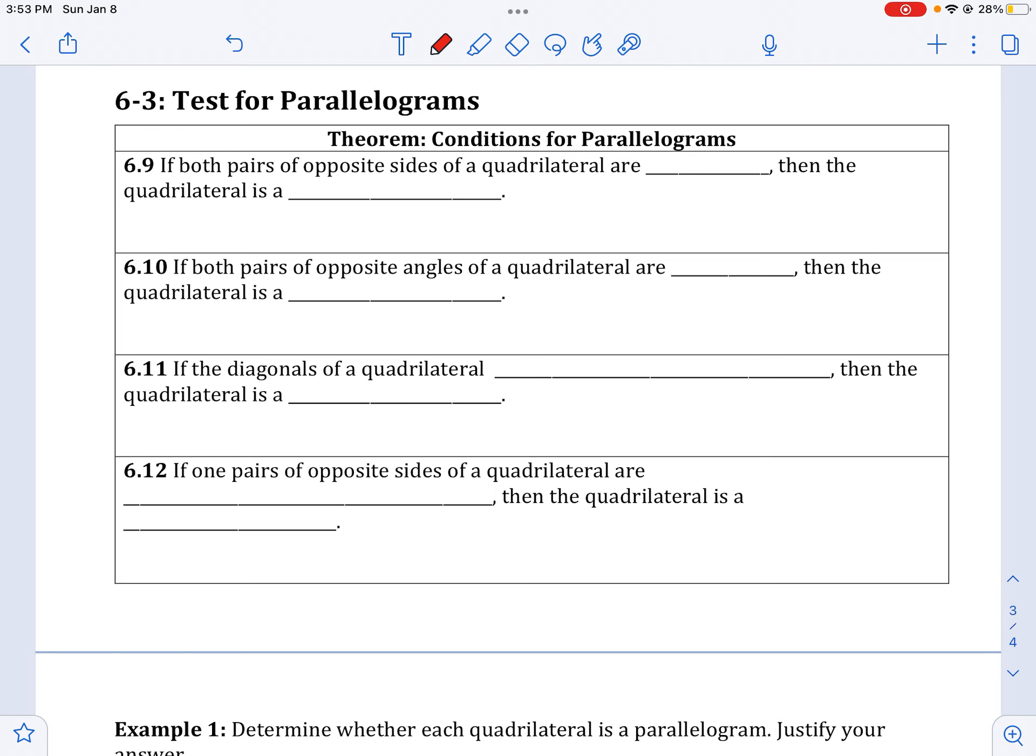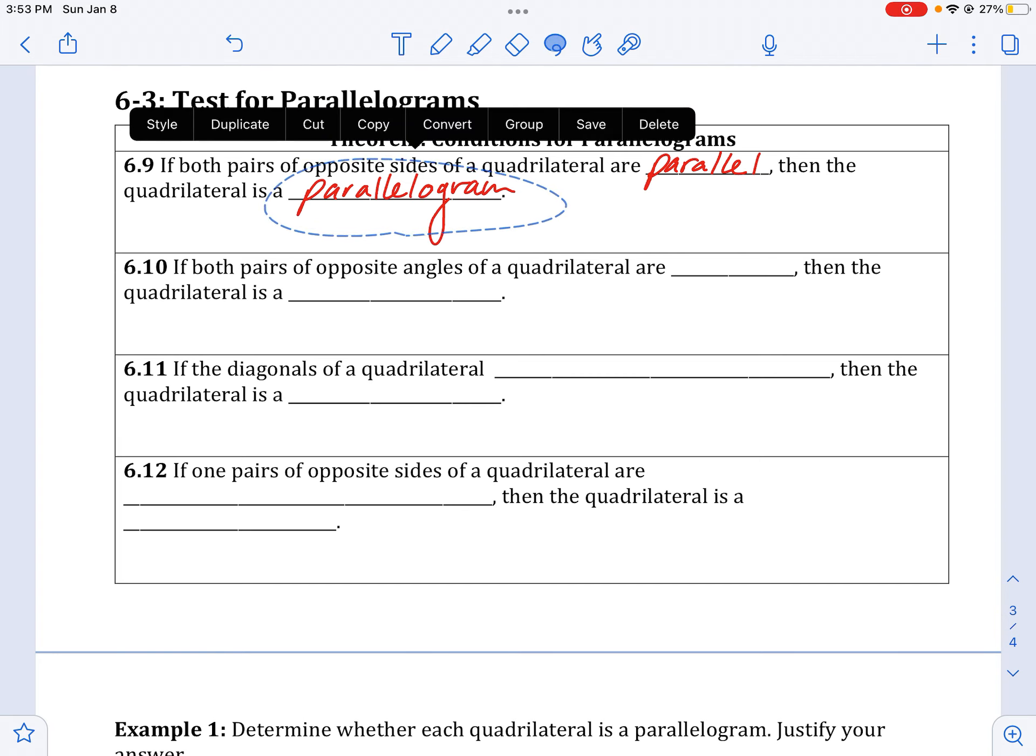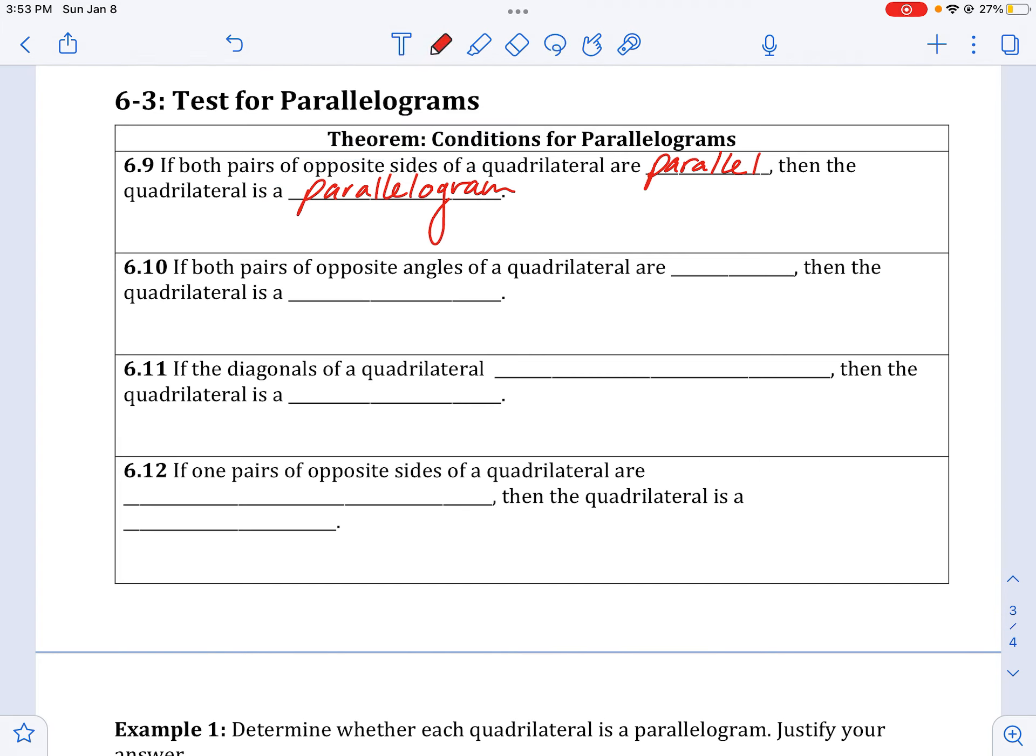We're going to say, well, here's some theorems, and if I give you these theorems, then can you claim that it's really a parallelogram? So if you see a figure where both pairs of opposite sides are parallel, then you know it must be a parallelogram.